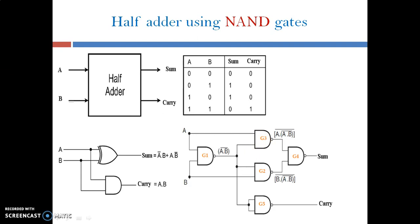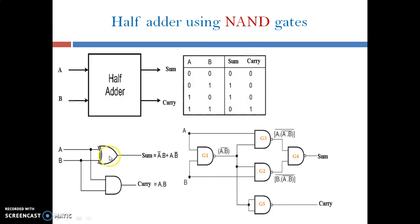Hello friends, let's design the layout for a half adder using NAND gates. This layout will be designed with Microwinding software. Briefly, we'll go through the half adder, which has two logic inputs A and B, and outputs are sum and carry. This is the truth table which is to be verified.